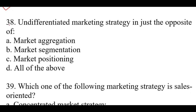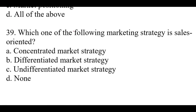Question number thirty-eight: Undifferentiated marketing strategy is just the opposite of — right option is B: Market segmentation. Question number thirty-nine: Which one of the following marketing strategy is sales oriented? Right option is B: Differentiated marketing strategy.